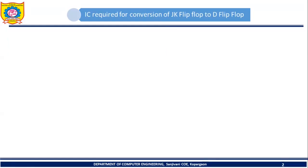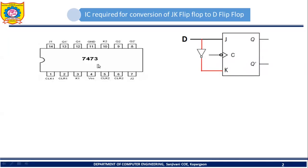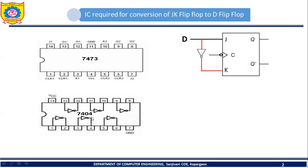Now let's see the ICs required for conversion of JK flip-flop into D flip-flop. In order to implement this circuit, we will require two ICs. The first IC should contain a JK flip-flop and the second IC should contain a NOT gate. The first IC is 7473, which contains two JK flip-flops, and the second IC is 7404, which contains six NOT gates. Using these two ICs we will implement this circuit.